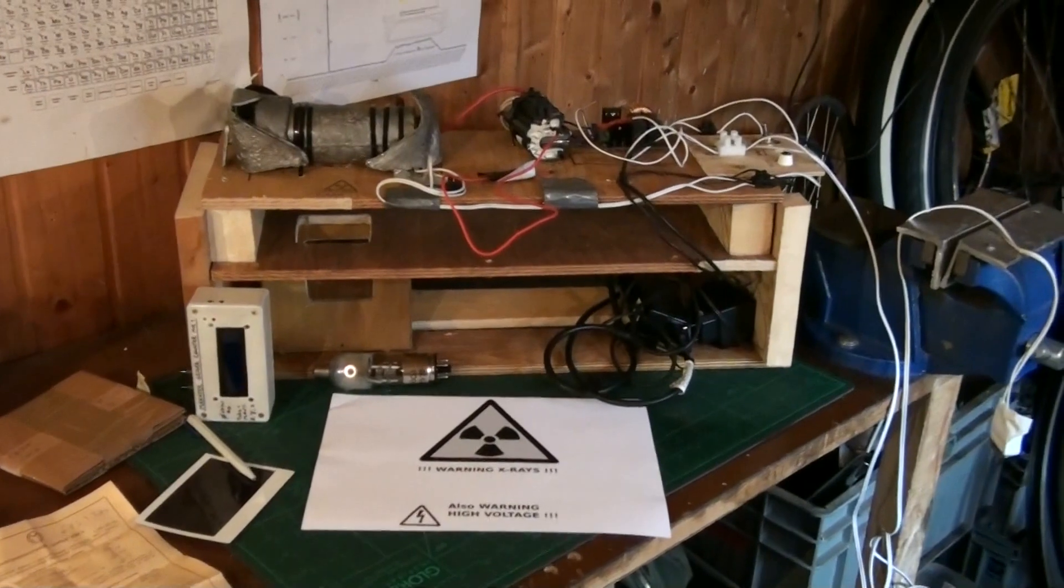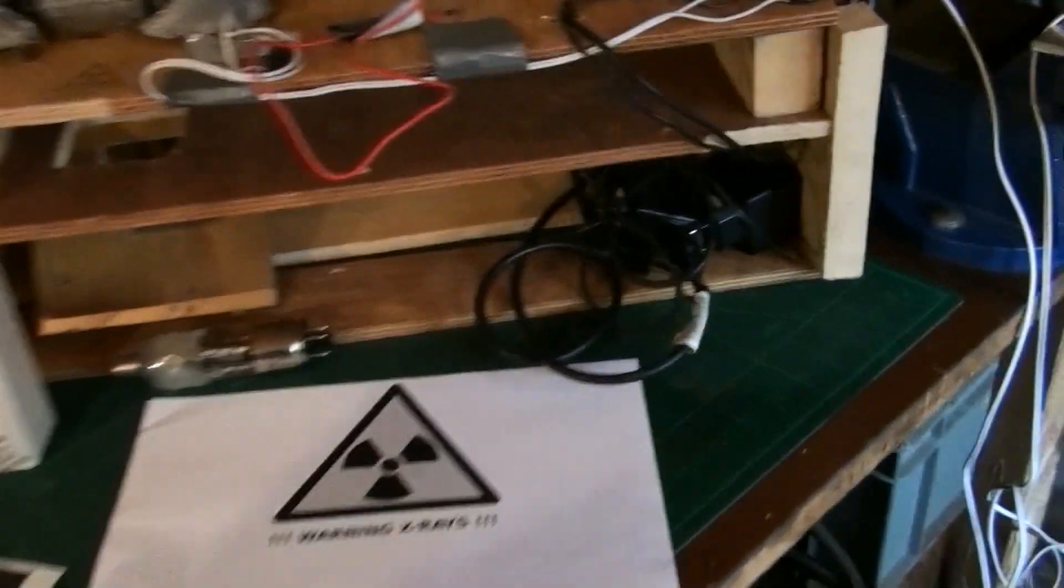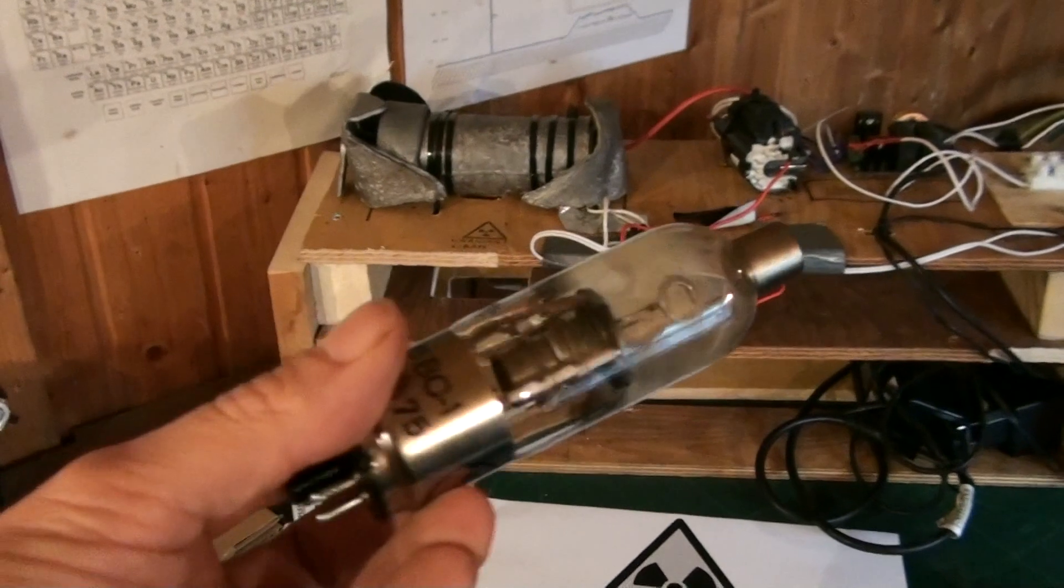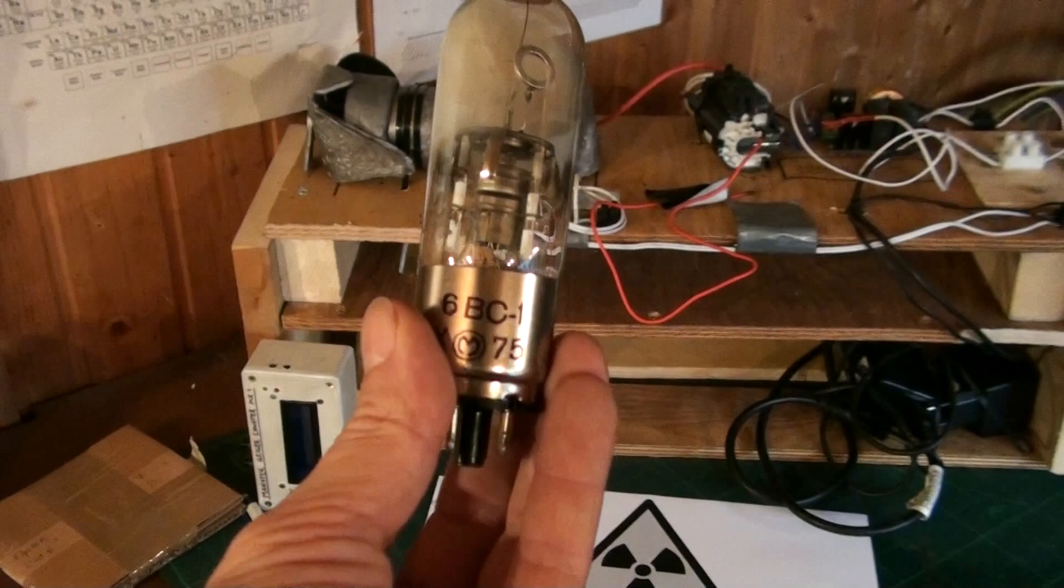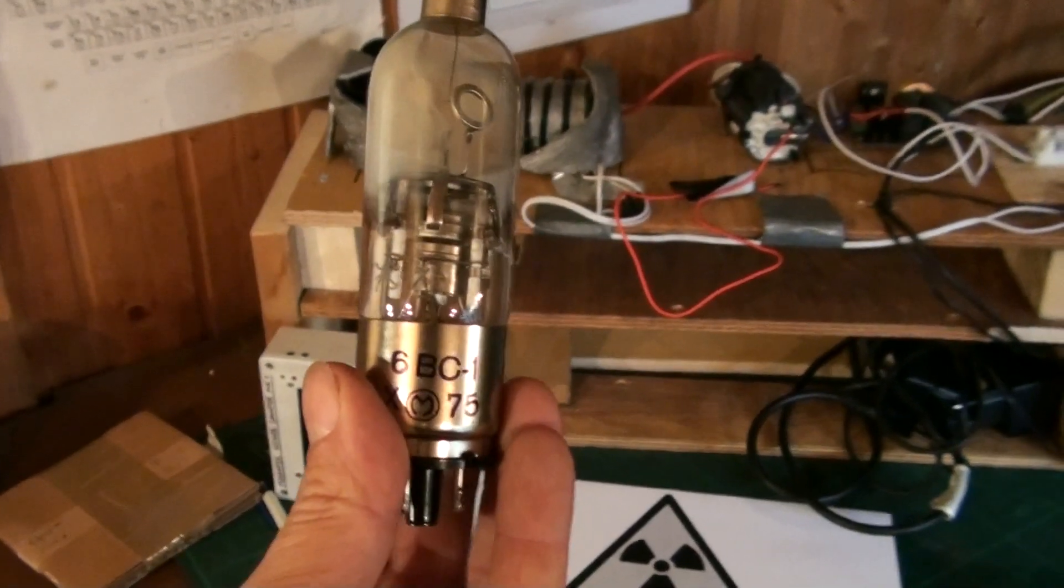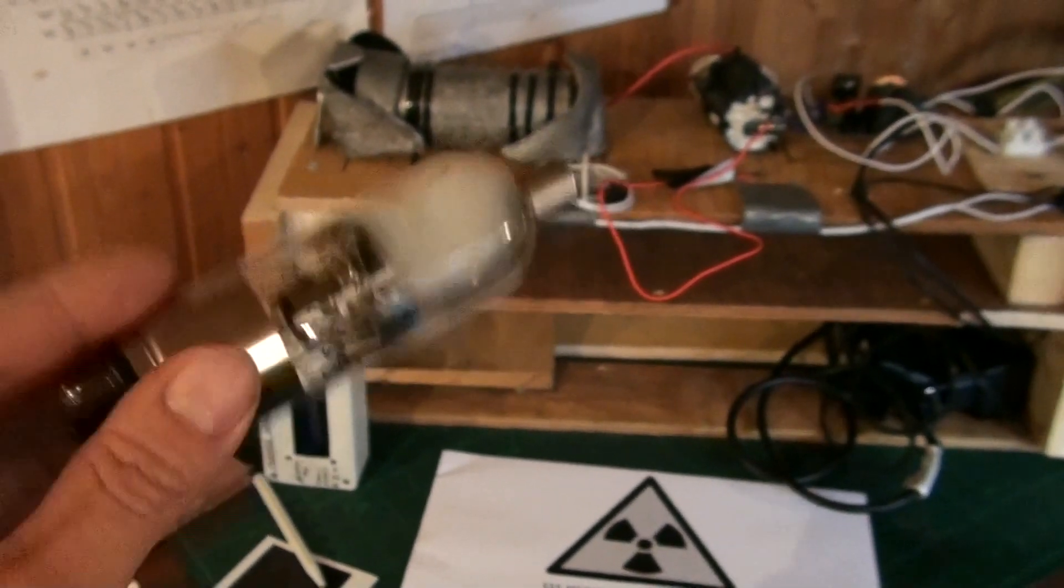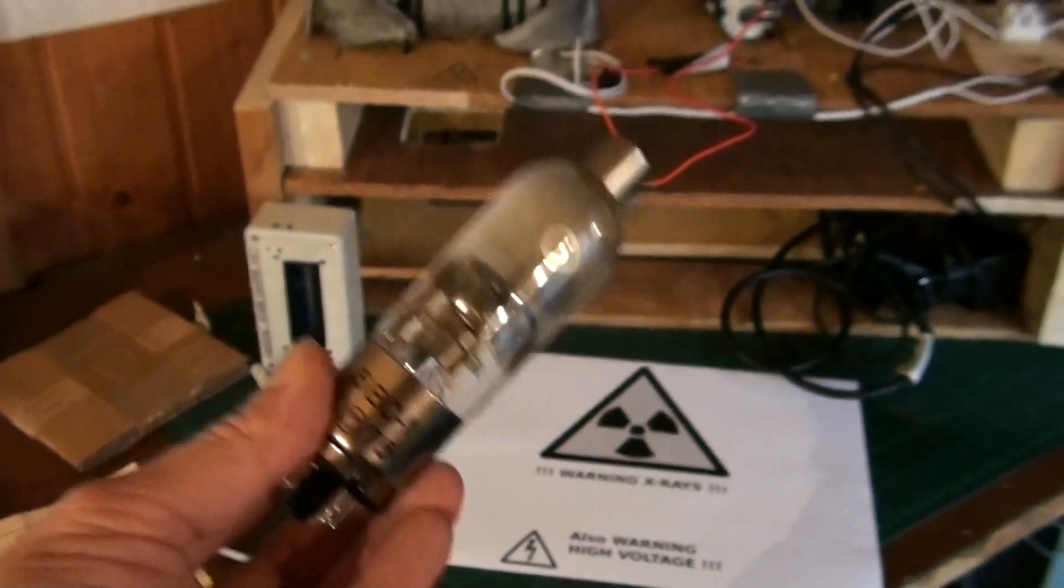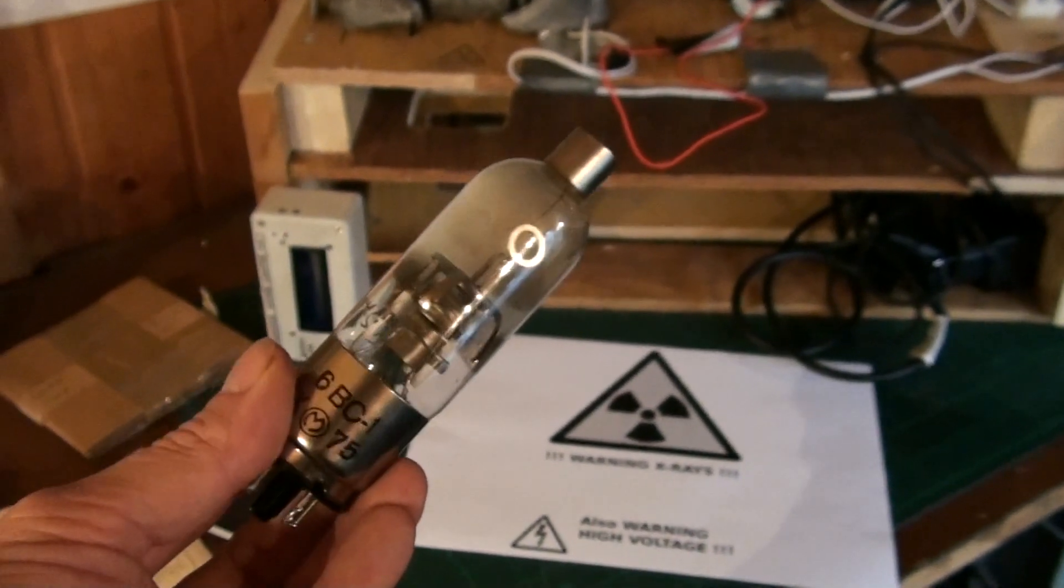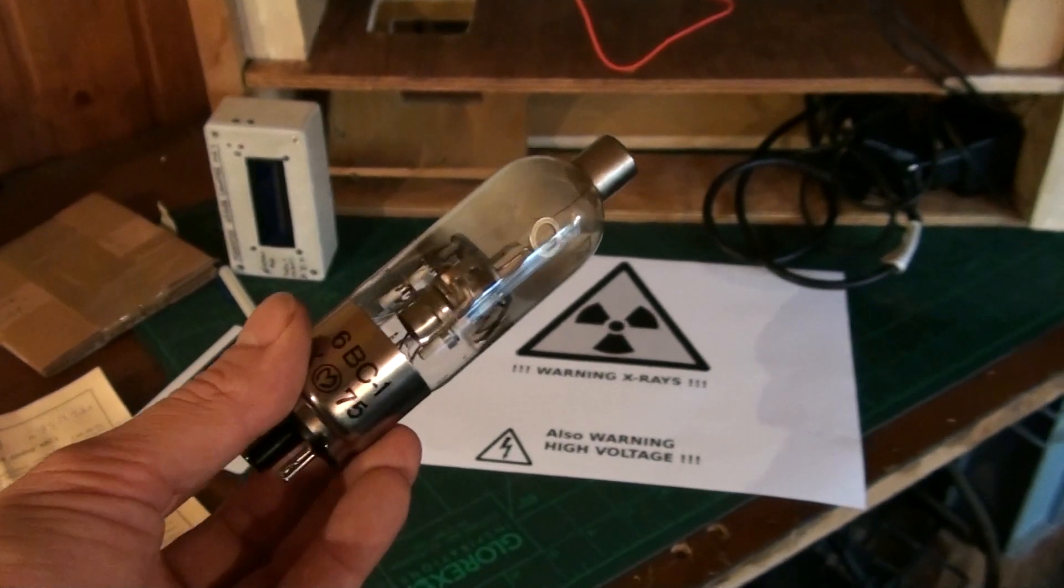The whole idea is that some vacuum tubes, like these old Soviet era Russian high-voltage vacuum tubes - the model is 6BC1 in Cyrillic, which is 6VS1 in Latin alphabet - work with multiple different vacuum tubes. These are especially good in producing x-rays, which is not their intended purpose but more like a side effect if you overdrive them with too much voltage.